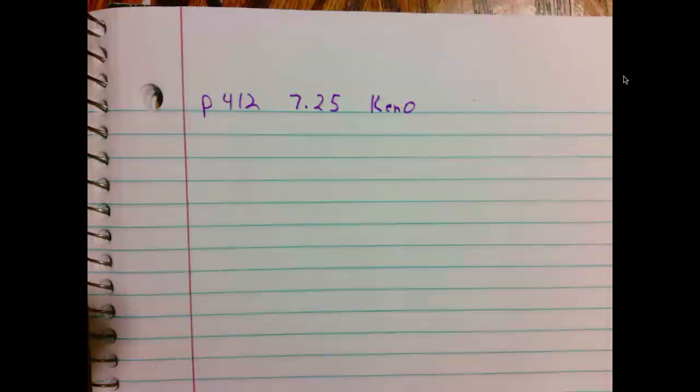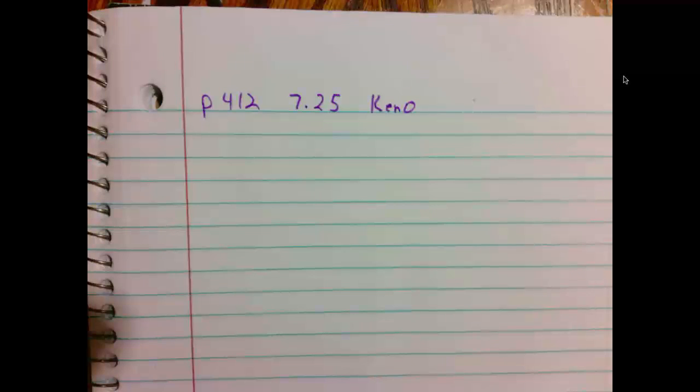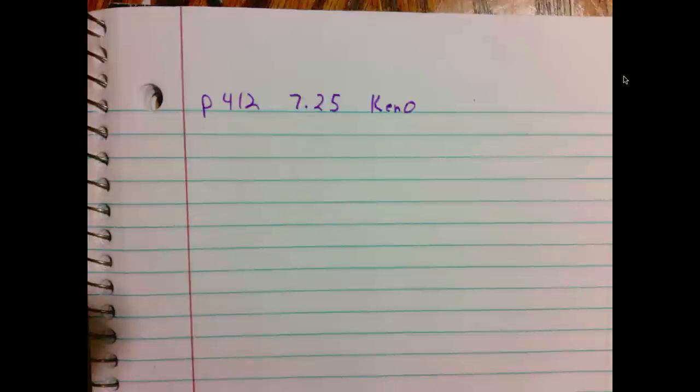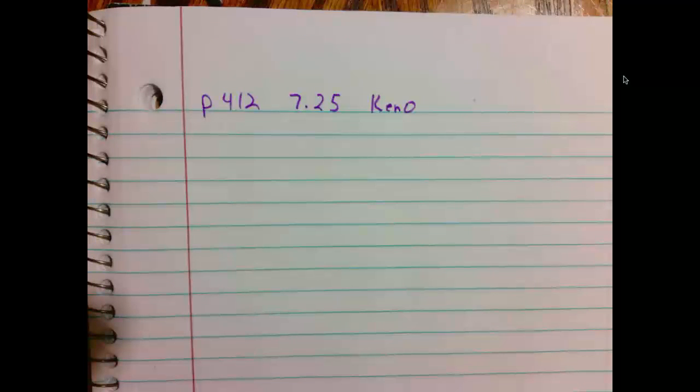We will be looking at page 412, problem 7.25, Keno. It says Keno is a favorite game in casinos. There's balls numbered 1 through 80, and then 20 of them are chosen at random. Players select numbers by marking a card. The simplest of the wagers is to mark one number.